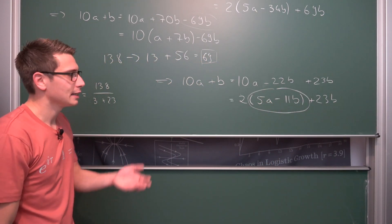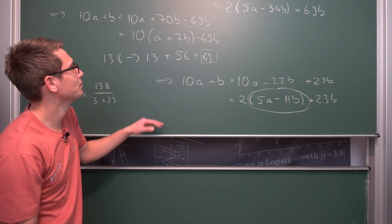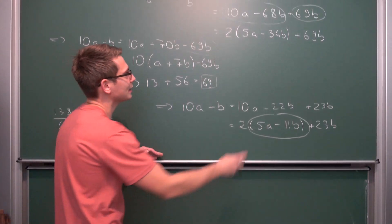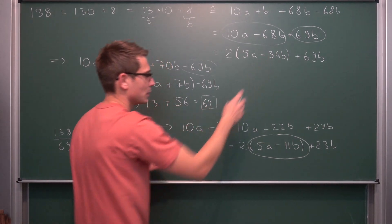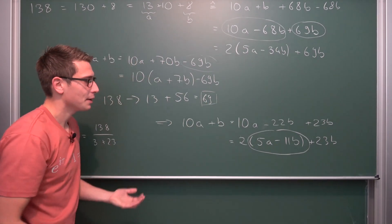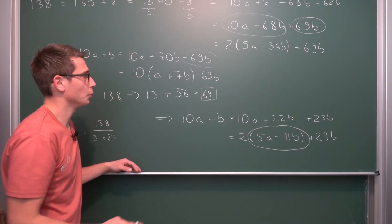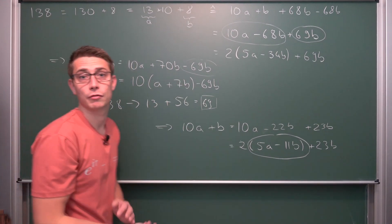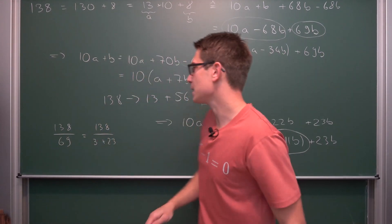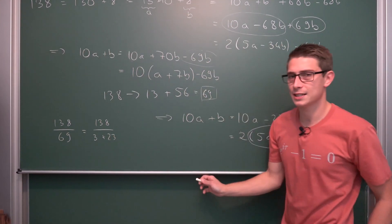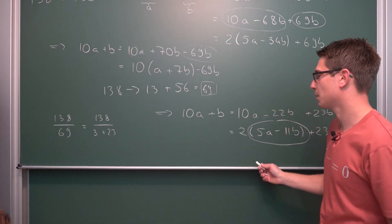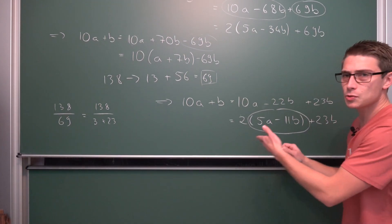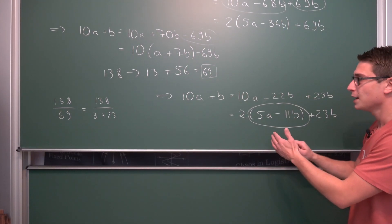Yeah, it's nearly as ugly as the algorithm we got before, but it does work. This is still the easiest divisibility rule for 23 I could come up with, and it is valid.